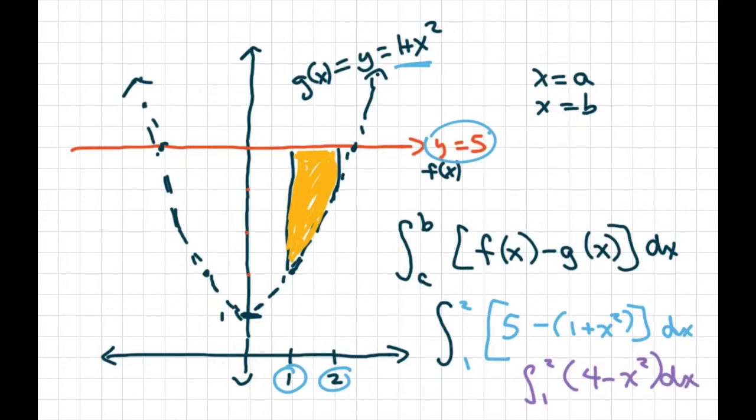Alright, because this simplifies to 5 minus 1 minus x squared, and that would equal 4. And that's it.